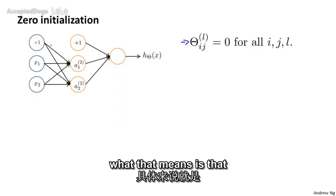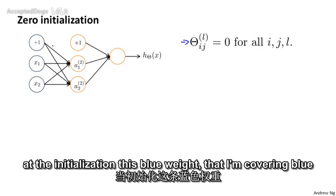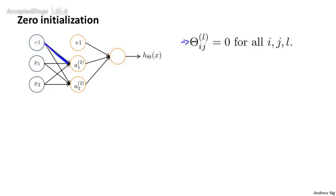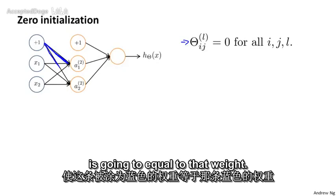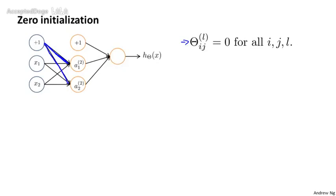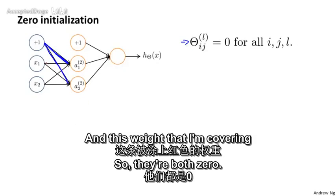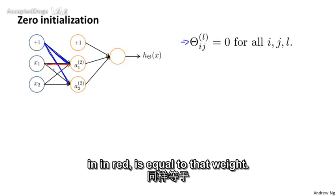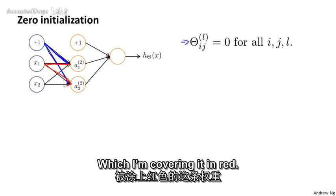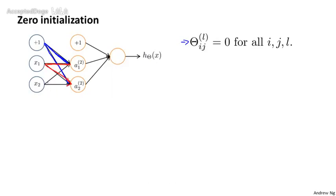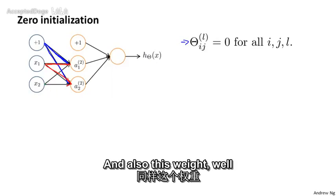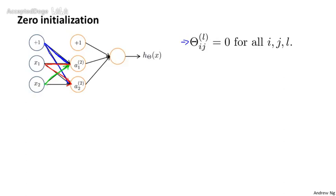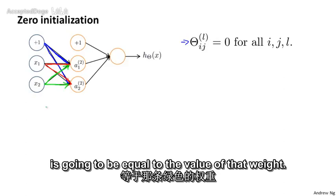If you do that, then what that means is that at the initialization, this blue weight — I'm coloring in blue — is going to equal that weight, so they're both zero. And this weight that I'm coloring in red is equal to that weight, which I'm coloring in red. And also this weight, which I'm coloring in green, is going to equal the value of that weight.